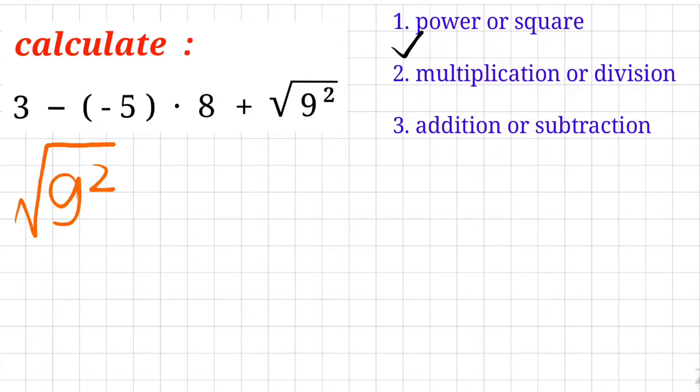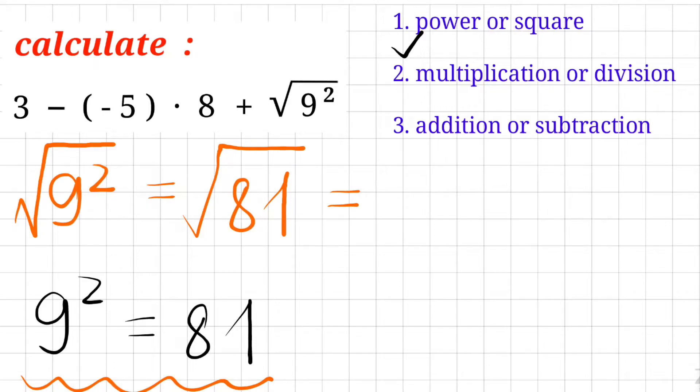And how can we solve it? Don't worry. From inside to the outside, because 9 to the power of 2 is 81. So the square root of 81, what's the square root of 81? Because 9 squared is 81, so square root of 81 is 9. The first step is already done.